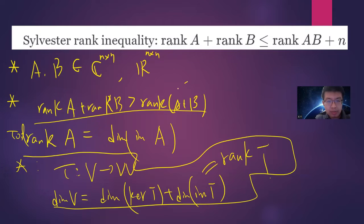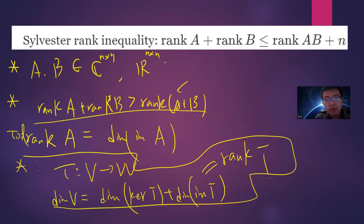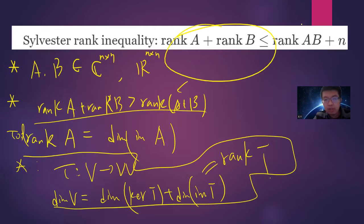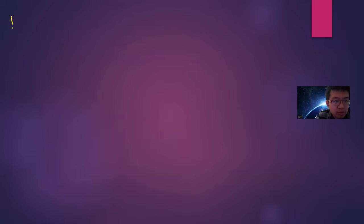Our goal is to find the upper bound: rank(A) + rank(B) ≤ n + rank(AB). This is a trivial proof you should try yourself. In this video I will present three proofs.